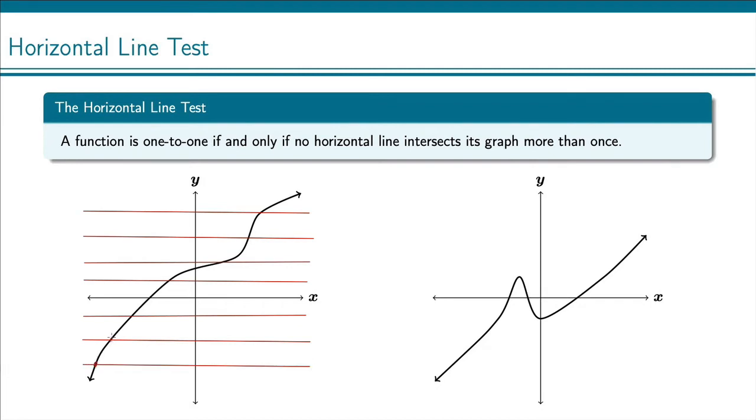Well, here I see no. The way that this function is, it always only crosses once. So by the horizontal line test, this is one-to-one.